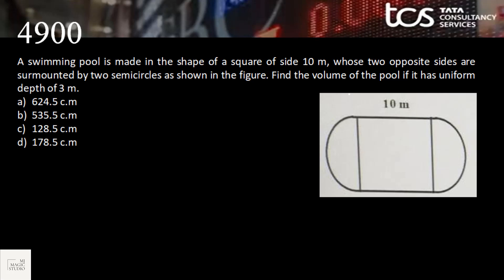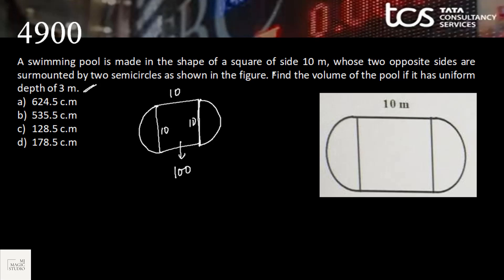A pool is made in the shape of a square of side 10 meters, where two opposite sides are surmounted by two semicircles — meaning the diameter of the semicircles is 10, and the radius is 5. Find the volume of the pool if it has a uniform depth of 3 meters. Area of square = 10 × 10 = 100 square meters. Two semicircles make one full circle, so area = π r² = 22/7 × 25 ≈ 78.5 square meters.